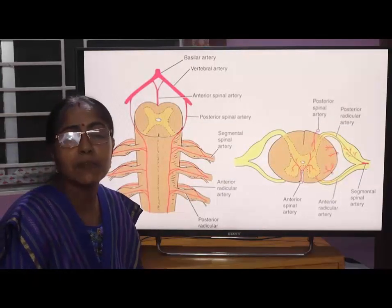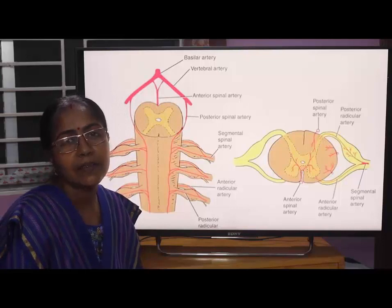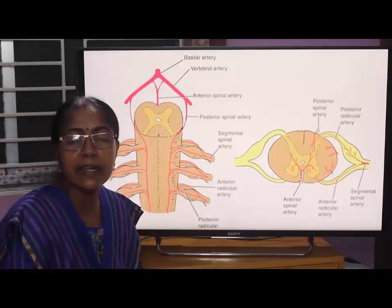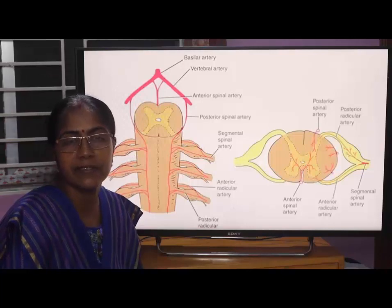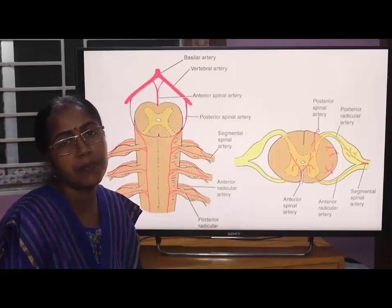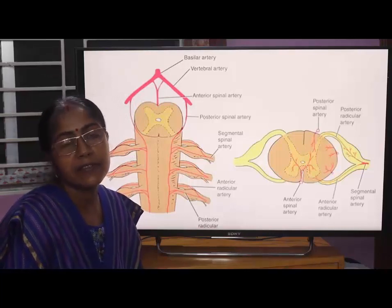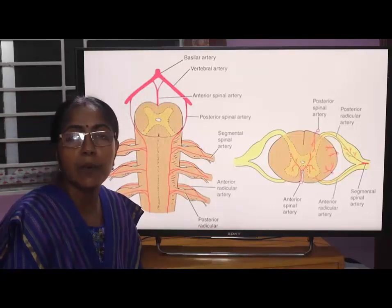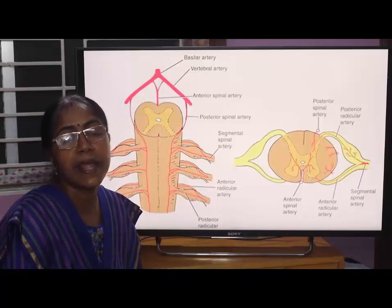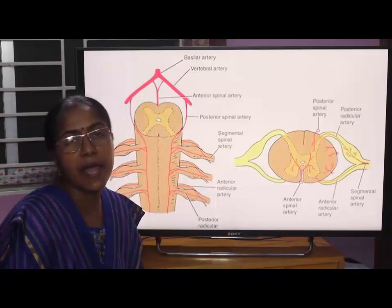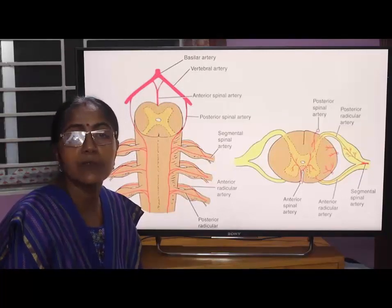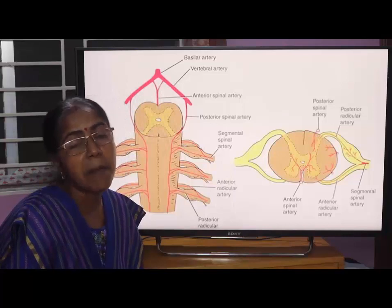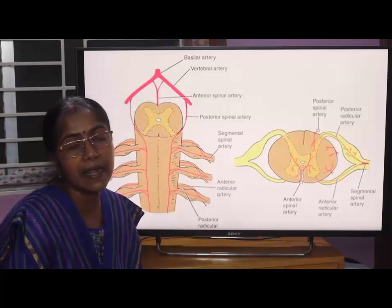What is spinal cord? It is the lower cylindrical part of the central nervous system. We know the central nervous system is composed of brain and spinal cord. The spinal cord lies within the vertebral canal.